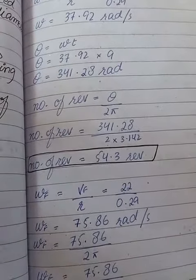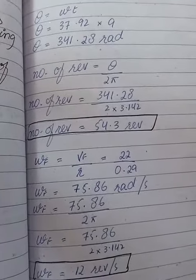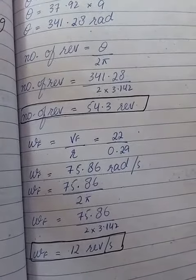Number of revolutions equals theta divided by 2 pi. This gives 341.28 divided by 2 times 3.142, which equals 54.3 revolutions.